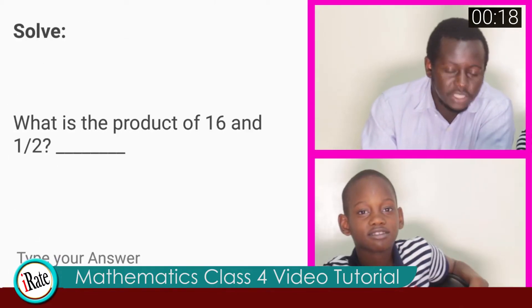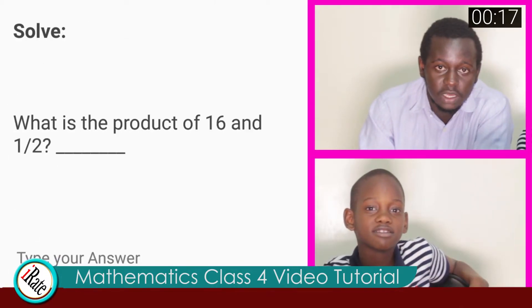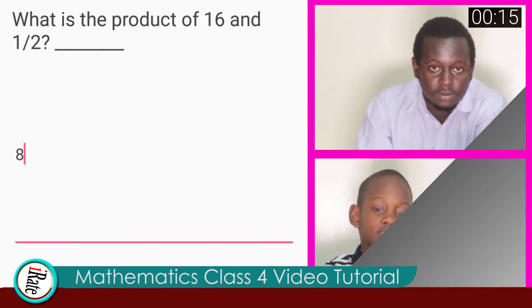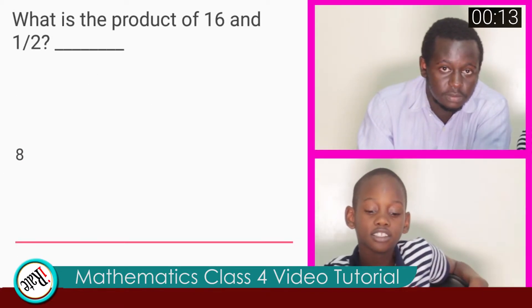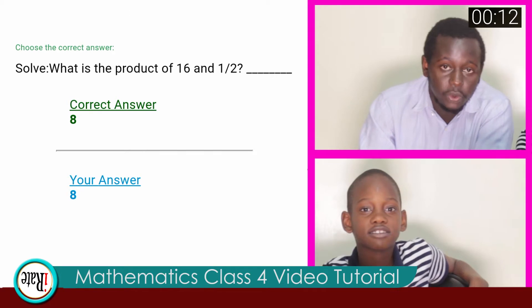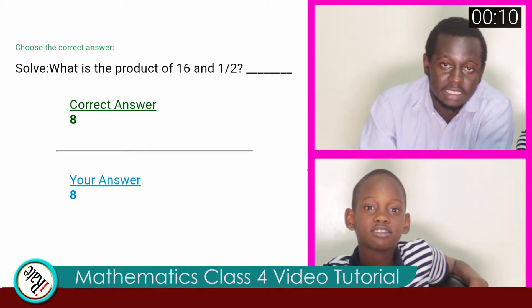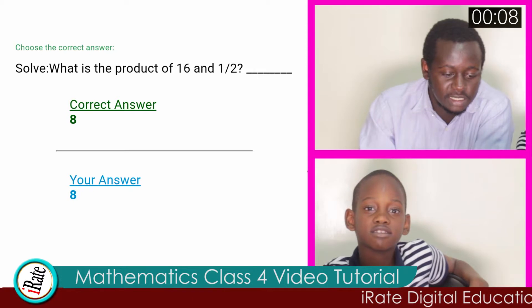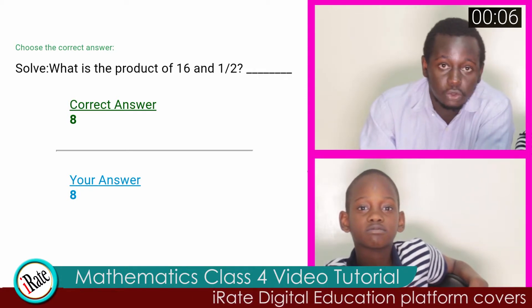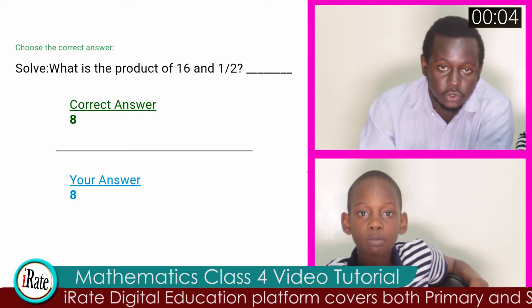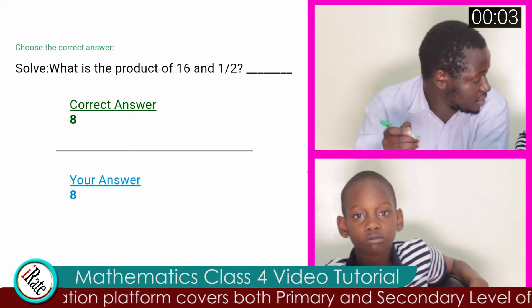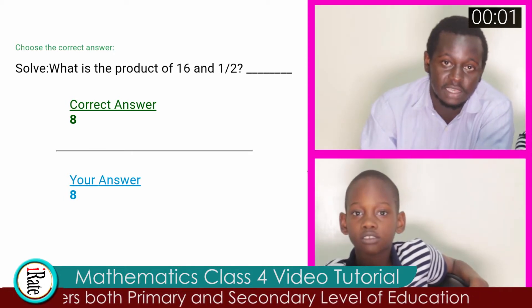Question number ten. What is the product of sixteen and a half? The answer to question number ten is eight. You are correct. When you talk of a product, we are talking about multiplication. It is the same as saying, what is the answer to one over two times sixteen? So, the two cancels out the sixteen to eight. So, the correct answer is eight.